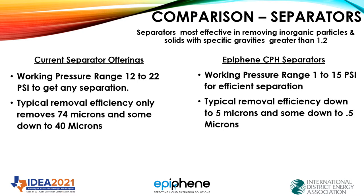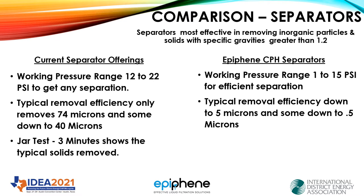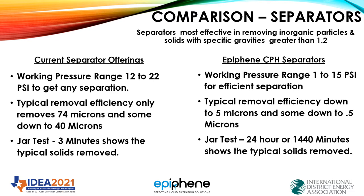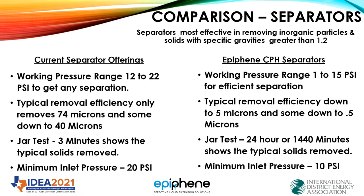Typical removal efficiency for the CPH is 5 microns, and we get up to 33% of the half micron. The jar test is an industry standard to show what effect a separator would have on a level of solids, and 3 minutes settling time is usually what's used for current offerings, whereas we use a 24-hour test — or 1,440 minutes — to show what could be removed. Minimum inlet pressure is 20 psi for most of those separators; our minimum inlet pressure is 10 psi.